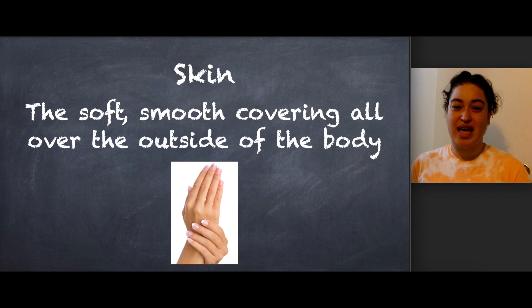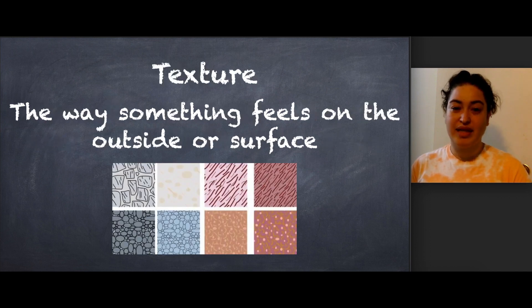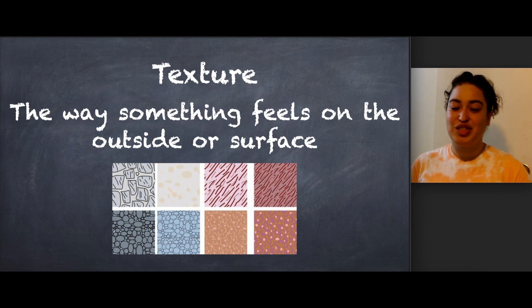Skin. Skin is the soft, smooth covering all over the outside of the body. And the last word is texture. Texture is the way something feels on the outside or surface.